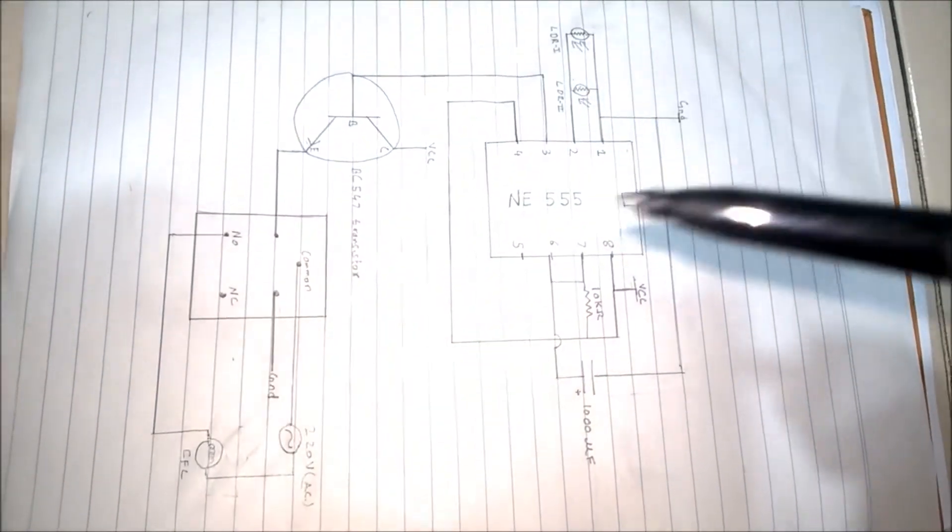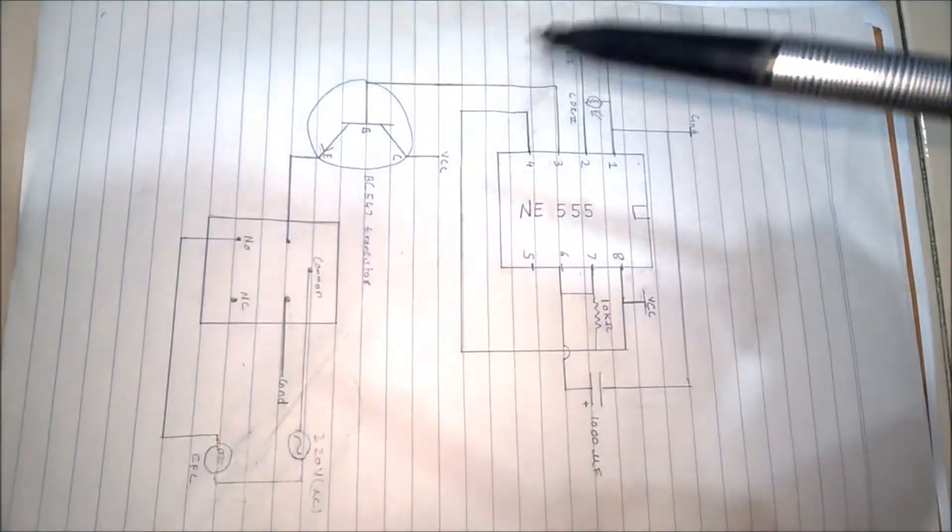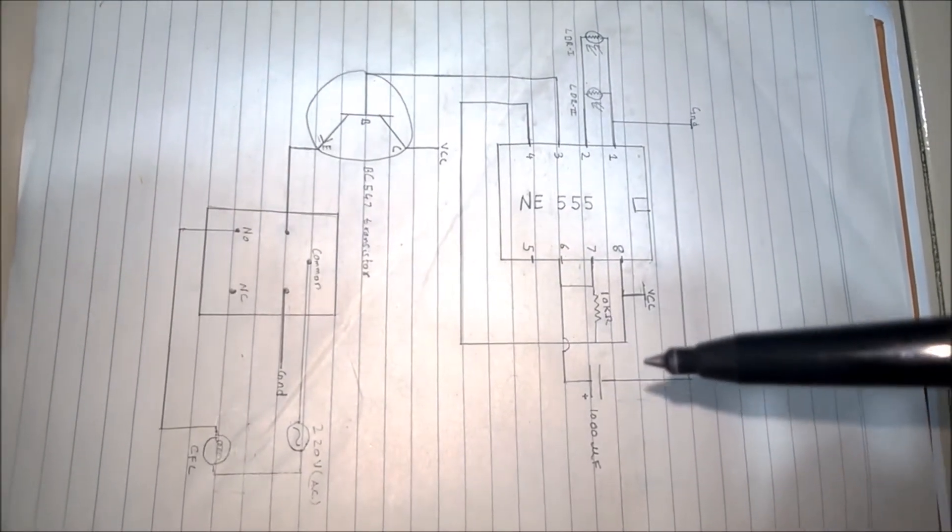as you pass from the door, your shadow sets off the LDR and at that very instant the circuit is reset, so the relay switches and thus the CFL turns off. It keeps working the same way. Hope you like it.